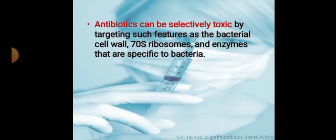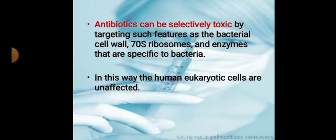The antibiotic can be selectively toxic by targeting features such as the bacterial cell wall and 70S ribosome and enzymes that are specific to bacteria. This is why human eukaryotic cells are not affected.